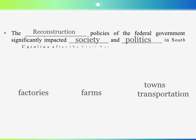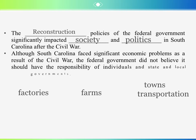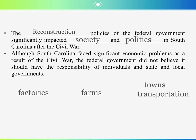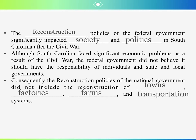The reconstruction policies of the federal government significantly impacted society and politics in South Carolina after the Civil War. Although South Carolina faced significant economic problems as a result of the Civil War, the federal government did not believe it should have the responsibility of individuals and state and local governments. Consequently, the reconstruction policies of the national government did not include the reconstruction of farms, towns, factories, and transportation systems. This is a common misunderstanding.